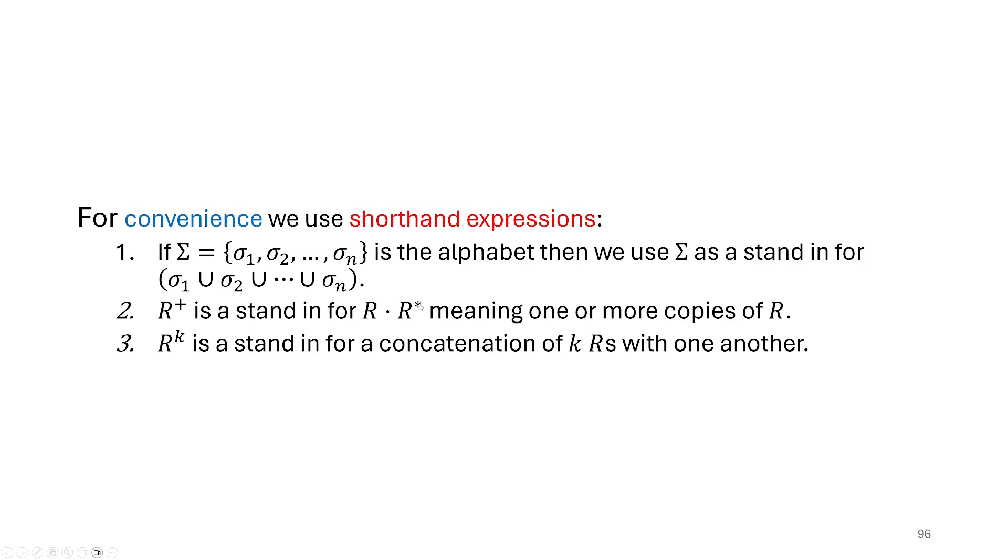The next thing we do is, well, we notice that the star operator allows us to have zero or more copies of a substring, but it is very common for us to want to have one or more copy of a substring, in which case we could just write it like this, r, the copy of the regular expression or the substring, and then concatenated with r star.